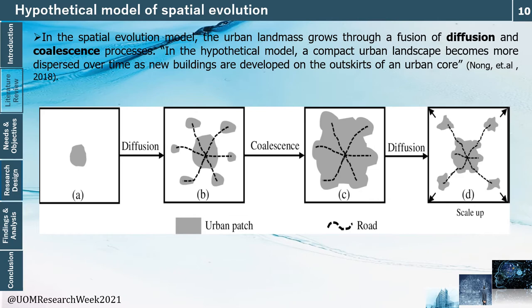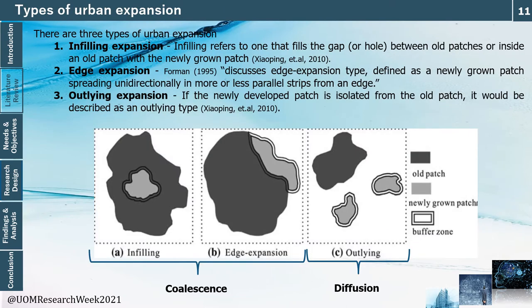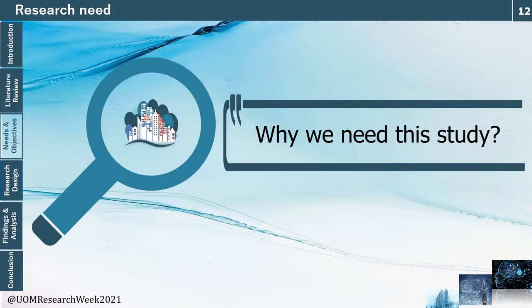Landscape metrics quantify each built-up area as patches. A hypothetical model of spatial evolution shows that built-up areas naturally grow near main town centers — called diffusion — and then these small centers grow and connect to the main town center, called coalescence. This process continues as a cycle. The diffusion and coalescence phases happen due to three types of expansion: infilling expansion, where new patches grow between or inside old patches; edge expansion, where patches grow parallel to old patches; and outlying expansion, where patches grow in isolation.